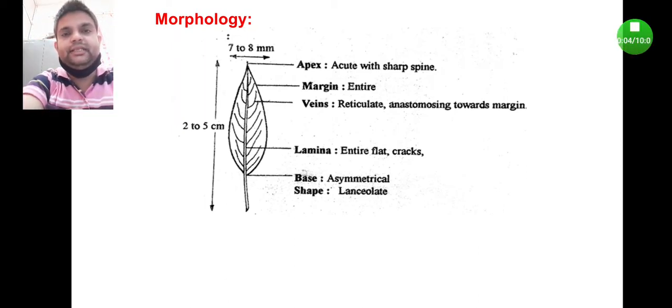Coming to the result and discussion part, first let us concentrate on the morphology of the Senna leaf. Senna leaf is very small in size, two to five centimeters in length and seven to eight millimeters in diameter.